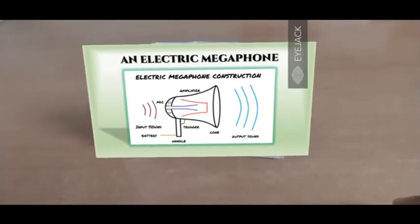An electric megaphone is an advanced version of an acoustic megaphone which uses electrical power. It consists of a microphone to capture the input sound and convert it into electrical audio signals.